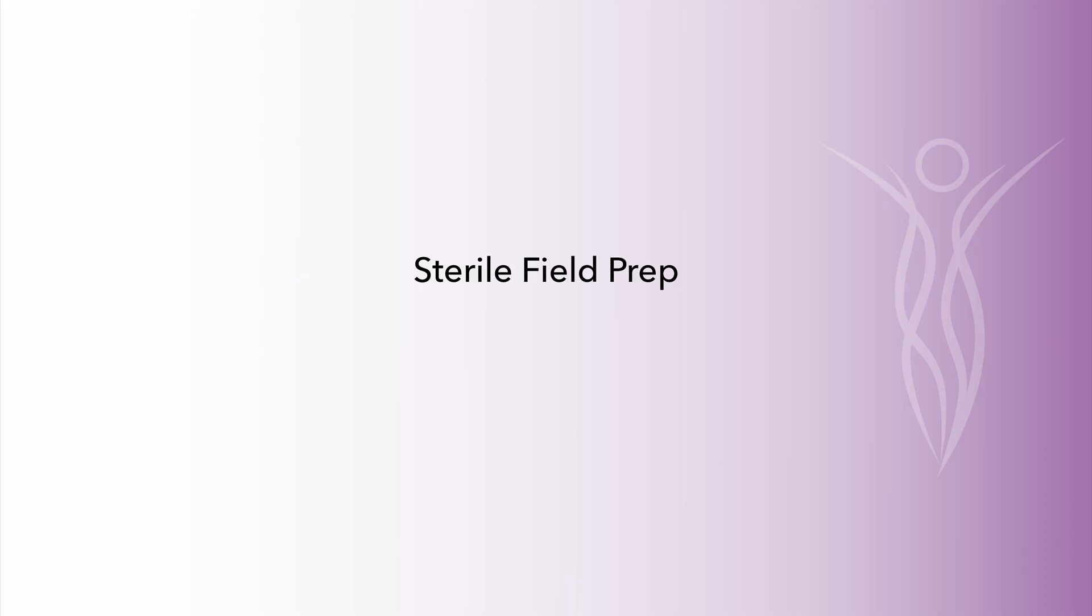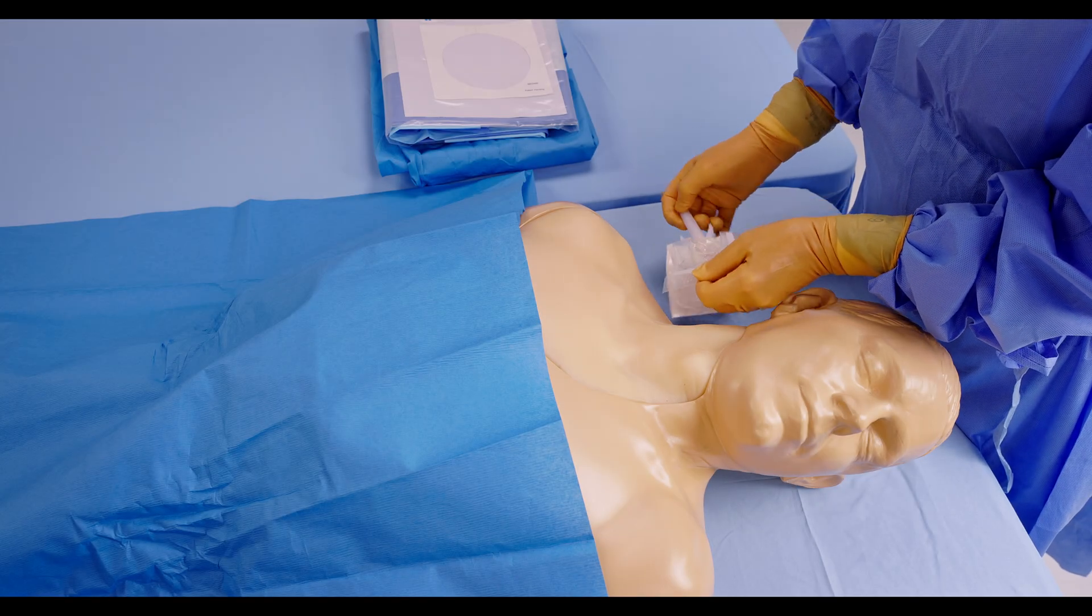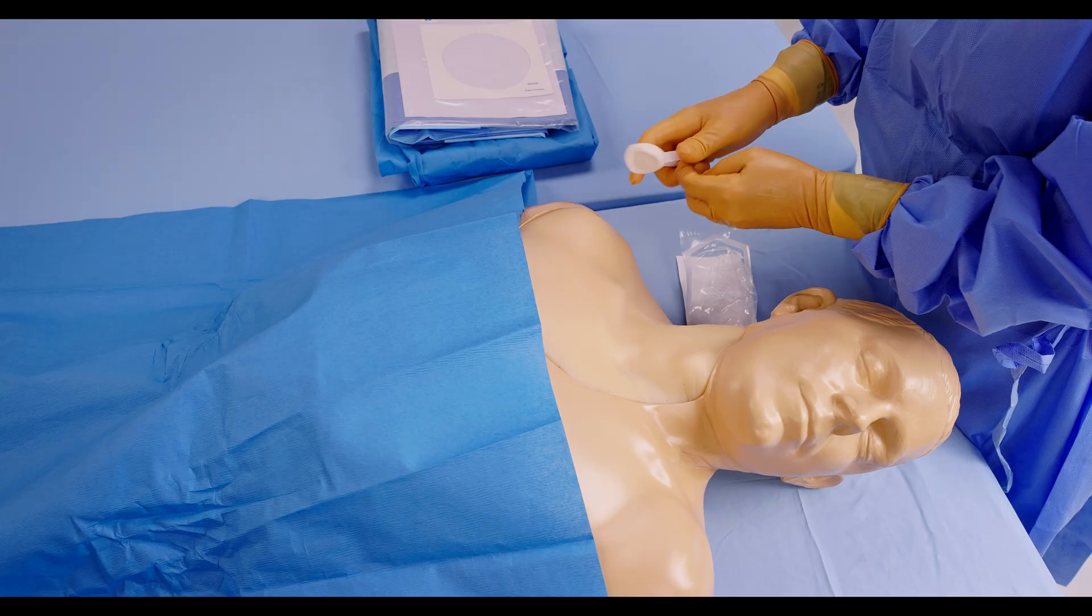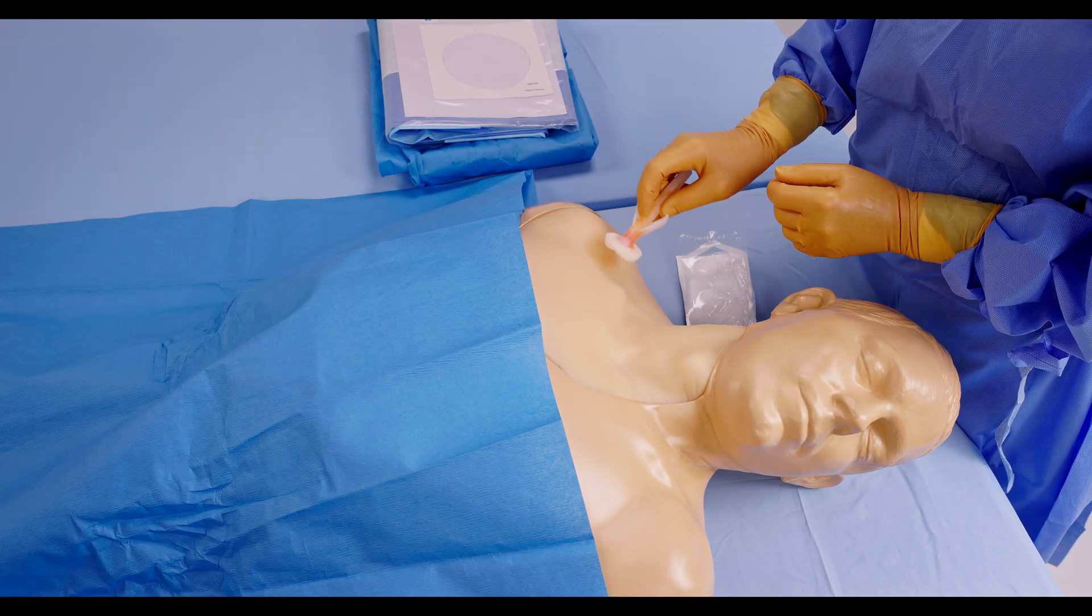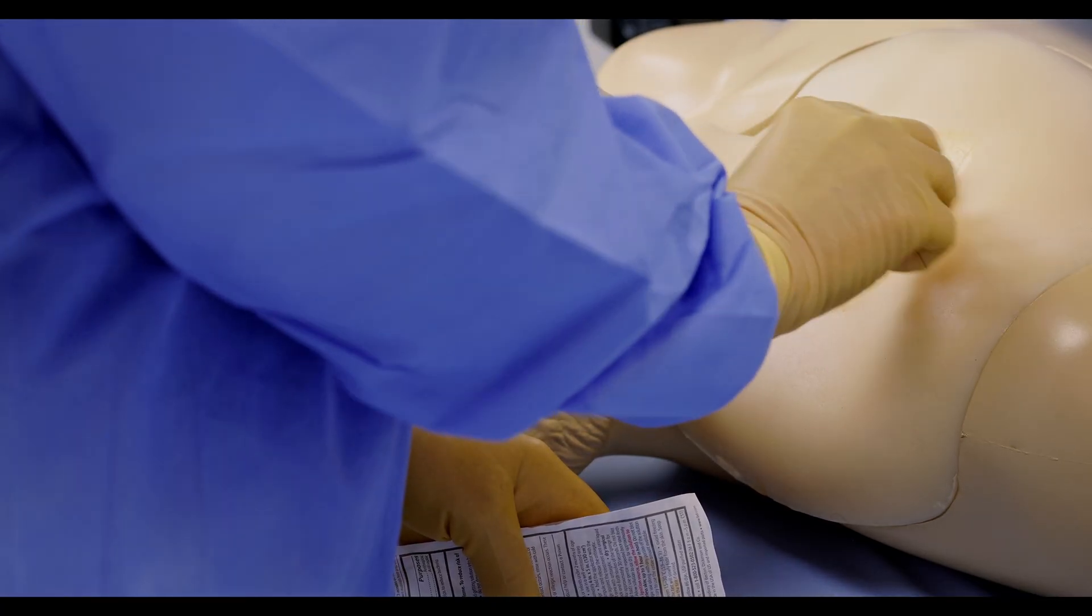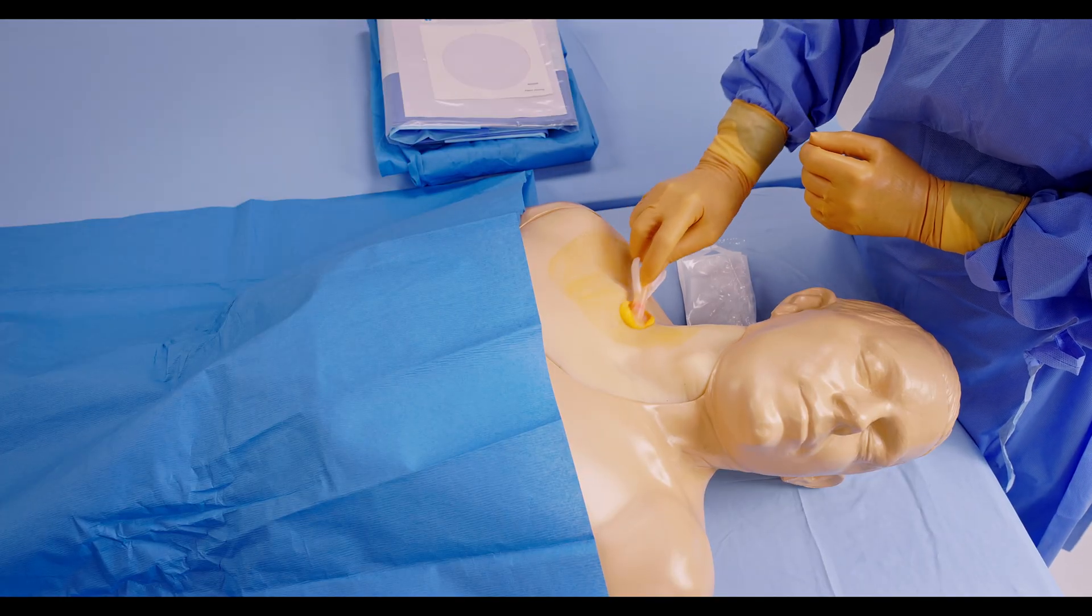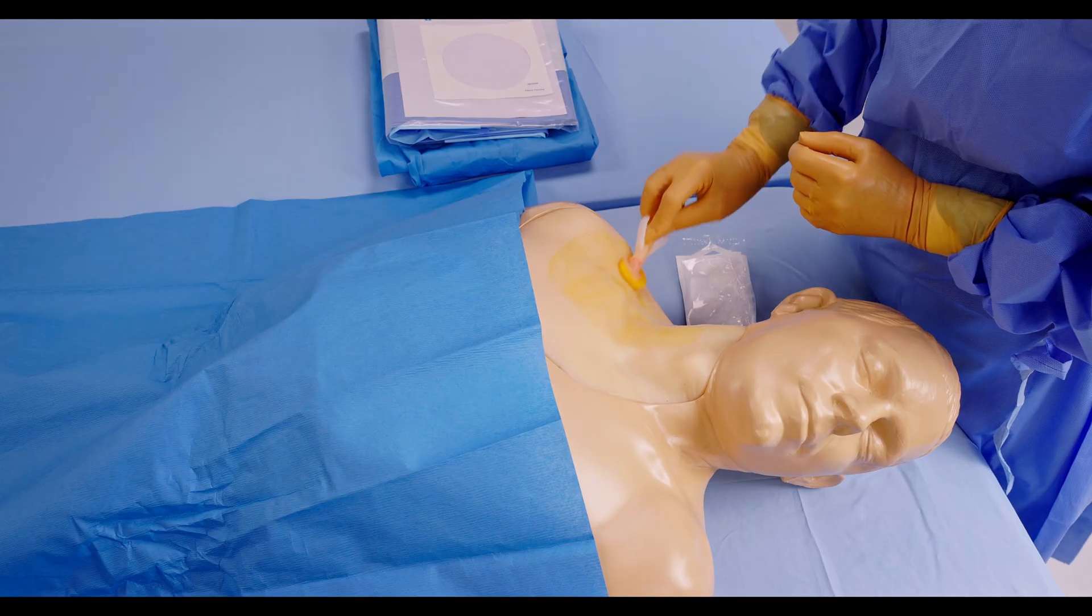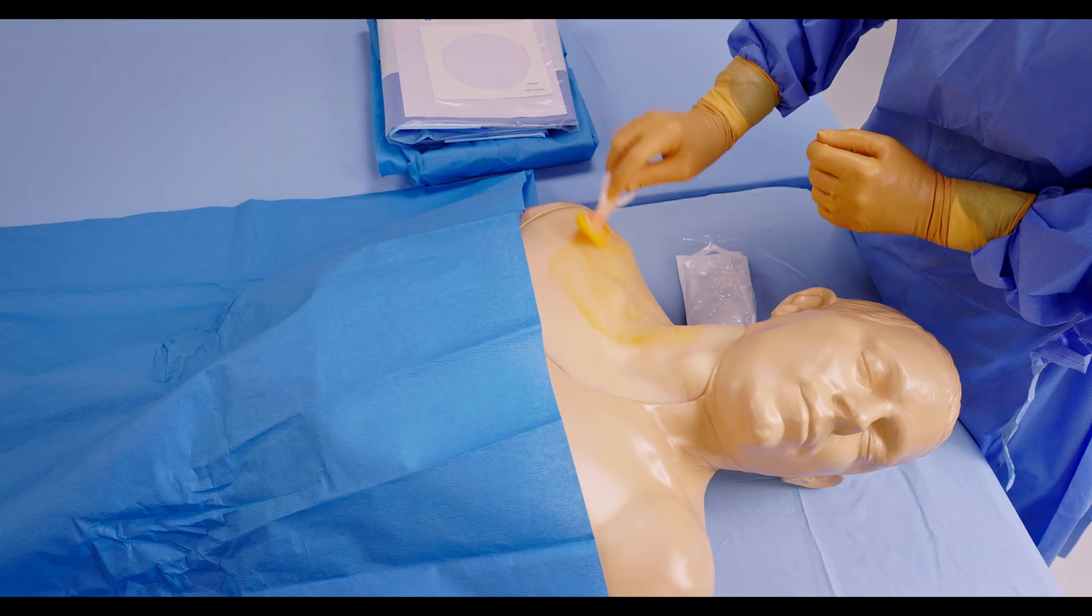Before initiating catheter insertion, the insertion site must be thoroughly disinfected and maintained within a sterile field. The SV Spectrum Triple Lumen CVC kit includes a BD Chloroprep applicator to facilitate skin antisepsis. To apply, activate the applicator by pressing and breaking the internal ampoule. Gently squeeze the applicator to release the solution onto the sponge tip. Apply the antiseptic solution to the insertion site using a back and forth motion for 30 seconds. Allow the area to air dry completely. Do not blot or wipe.